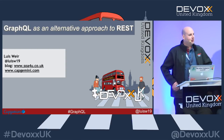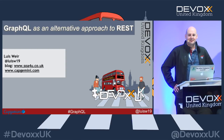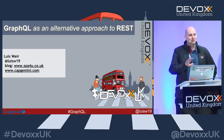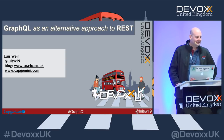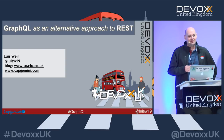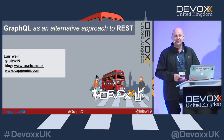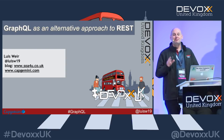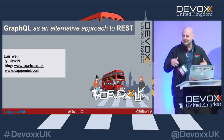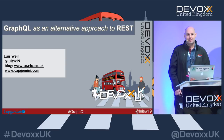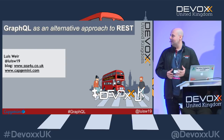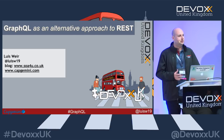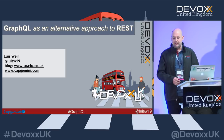First of all, thank you so much for coming. I was a bit worried that no one was going to come because the room was completely empty like seven minutes ago. So I was thinking maybe I should forget about GraphQL and just stick to REST. But I'm glad you're here, so it means I'm not the only one with this question — which is GraphQL as an alternative approach to REST, as an architectural style to build APIs.